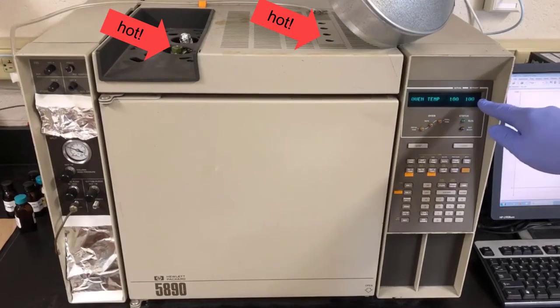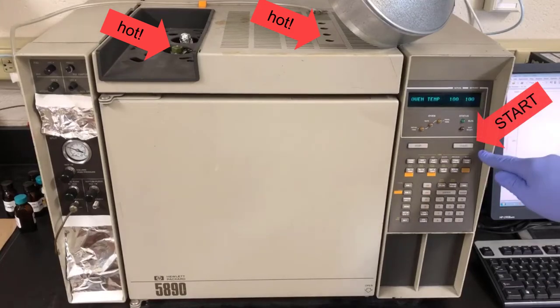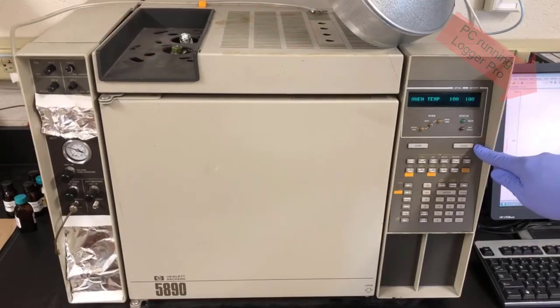Then we have the digital display that shows the column temperature and the start button. And the GC also has a computer next to it that runs a software program called Logger Pro. That's what we'll use to collect the data and interpret it.